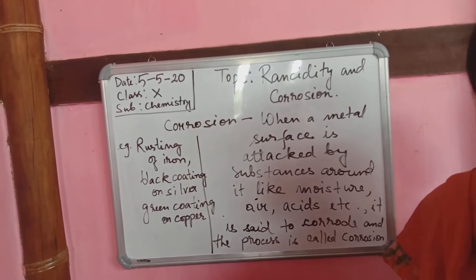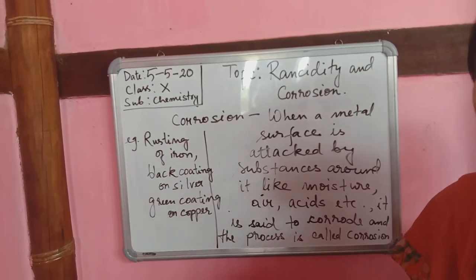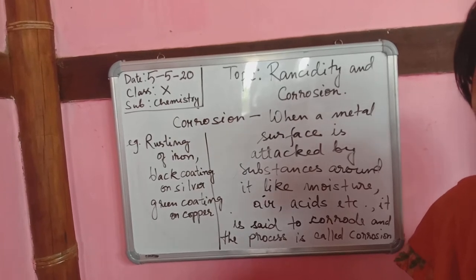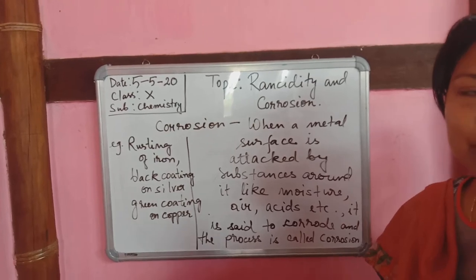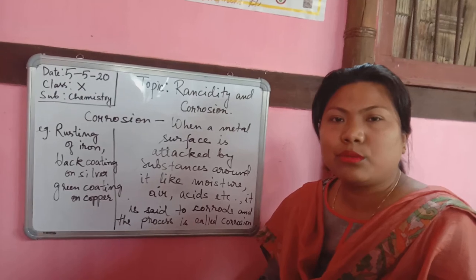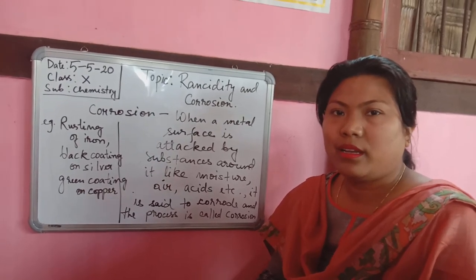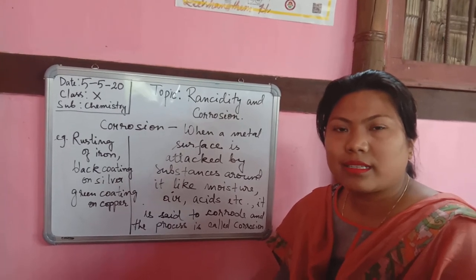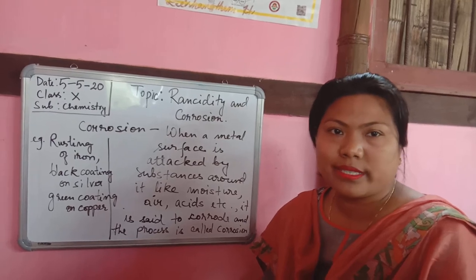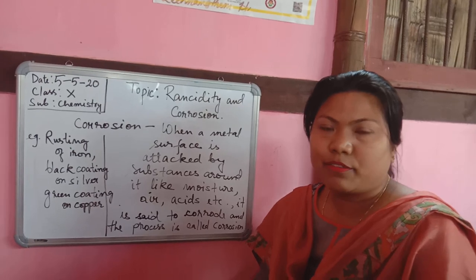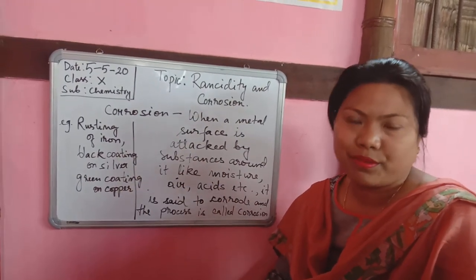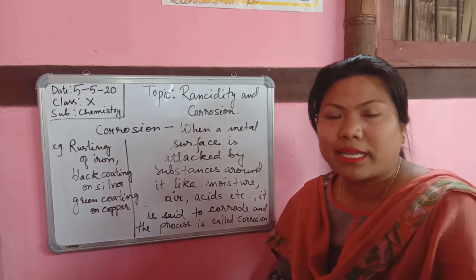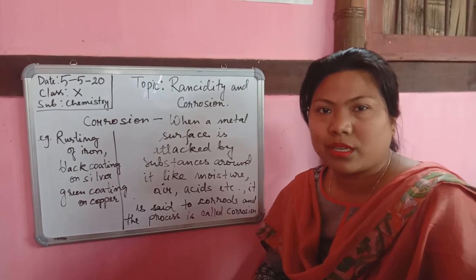Corrosion is also an undesirable change that we don't want, so we want to prevent it. To prevent corrosion you can do painting, to avoid the contact of air and moisture. You can do galvanization of iron articles. You can also do alloying — alloying means mixing two or more metals in the molten form and then solidifying again. Through the alloying process the properties of the metal change and you can prevent the metals from corroding. This topic of corrosion will be discussed in more detail in chapter three, metals and non-metals.